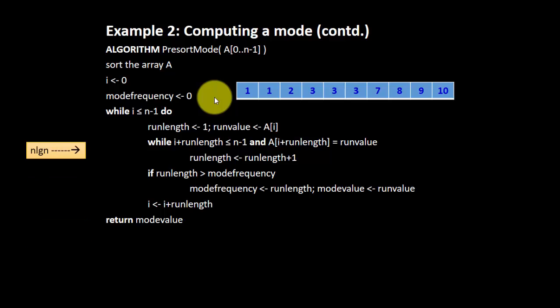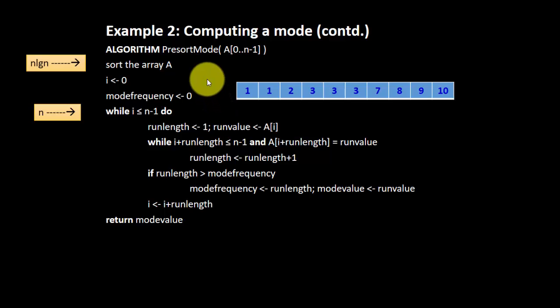And then from the sorting array, we have a complexity of N log N, and then for a while loop, because we have to only compute the mode of frequency, just one time. We don't have to do inner looping. So, it's N.